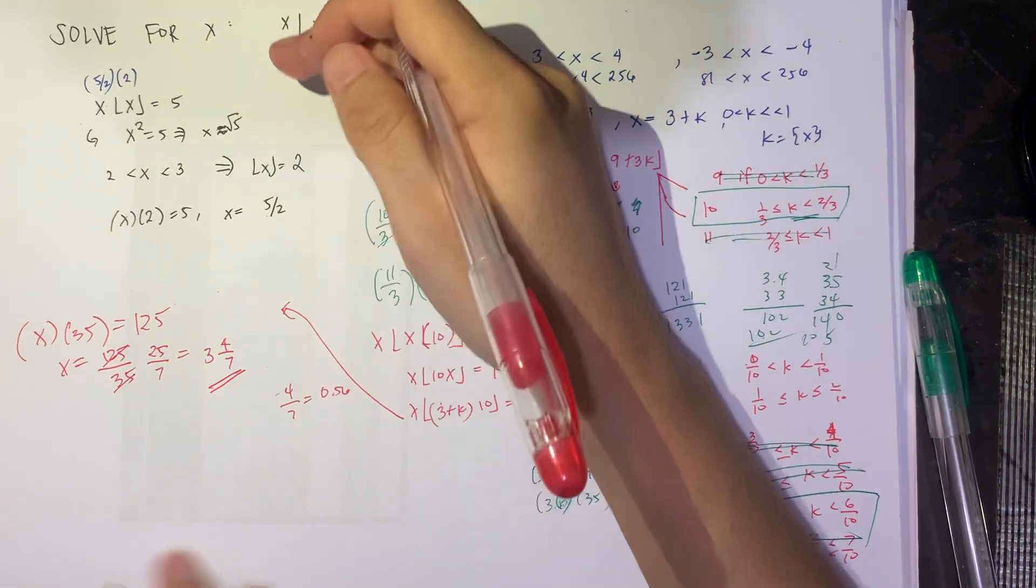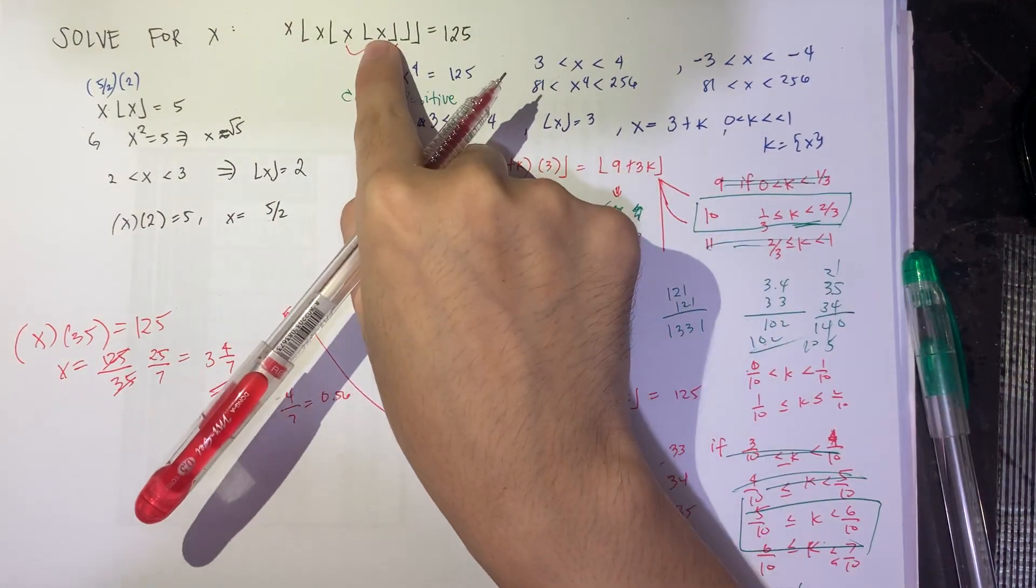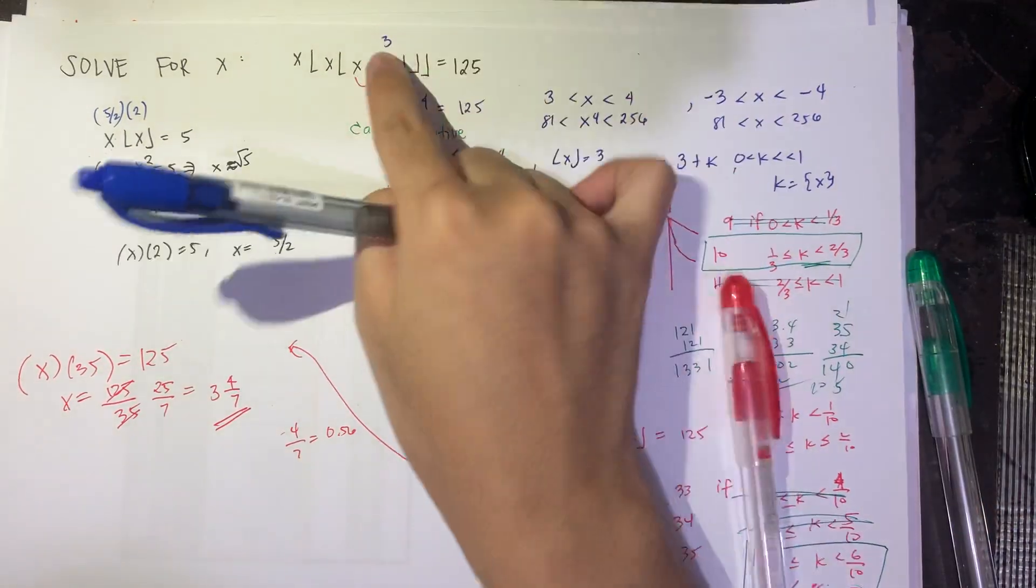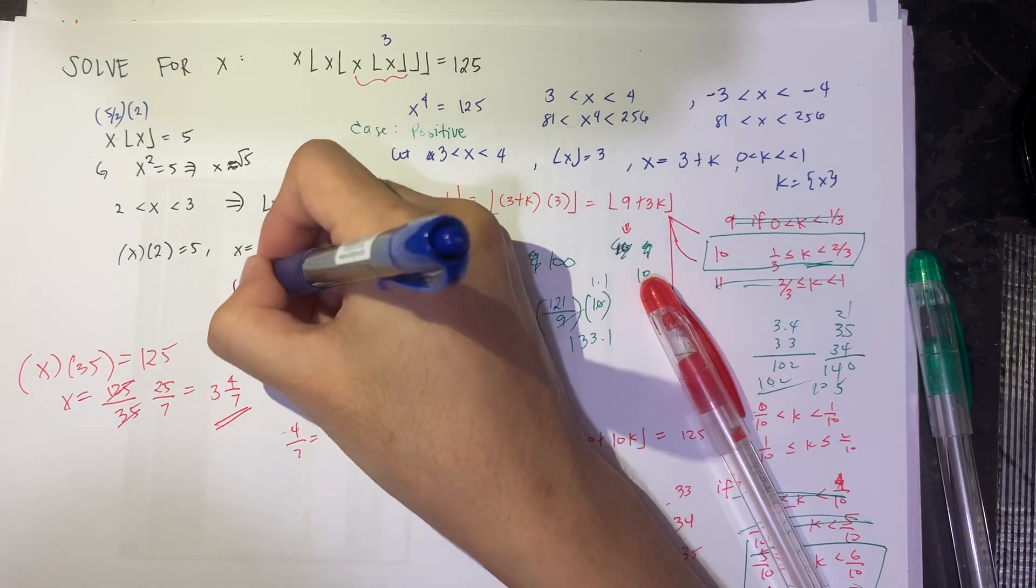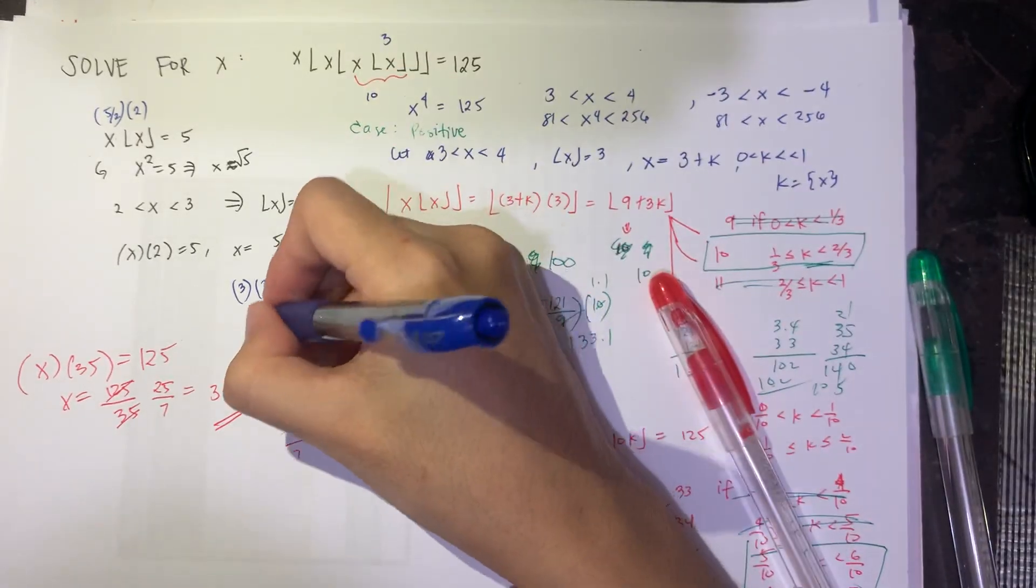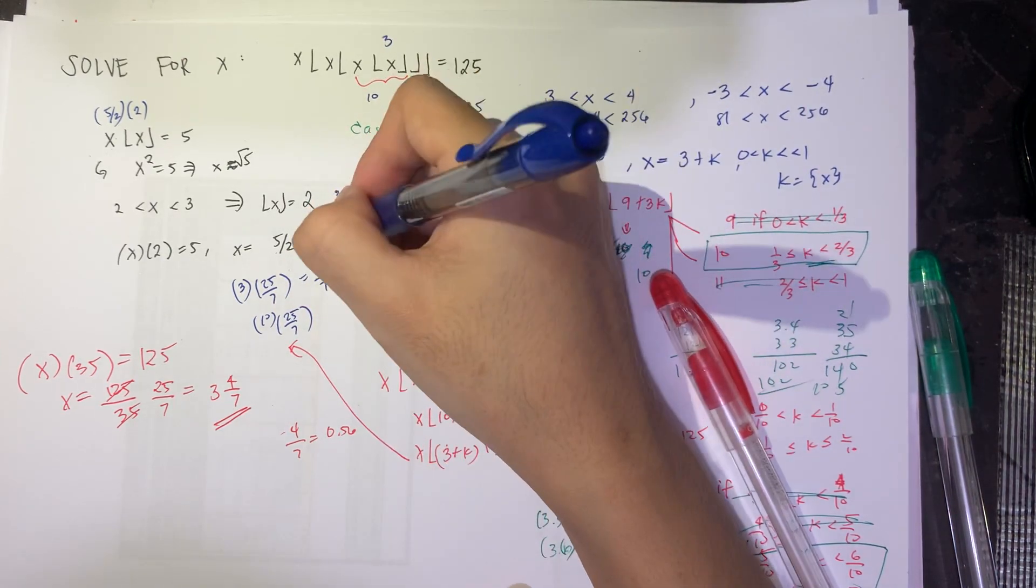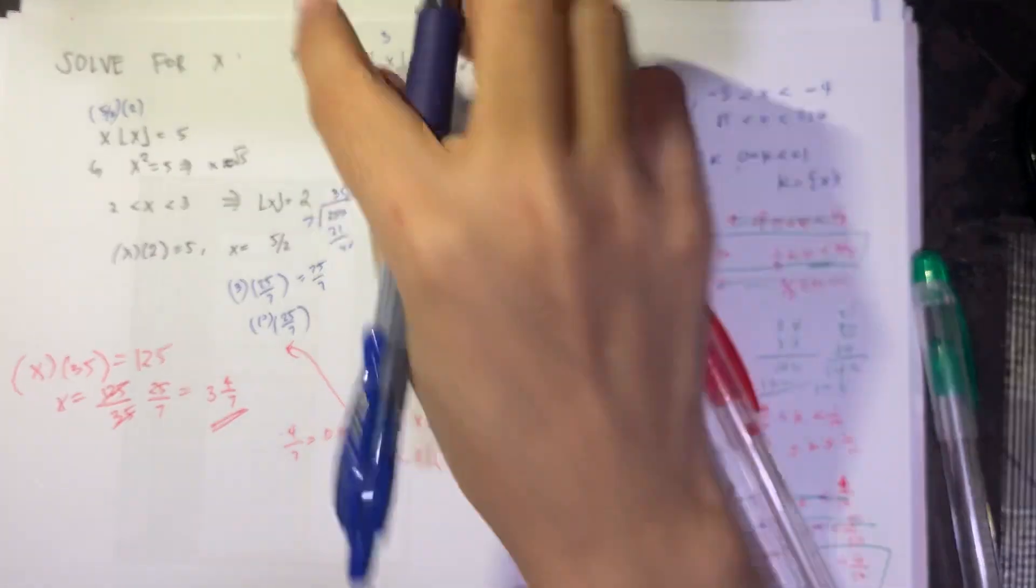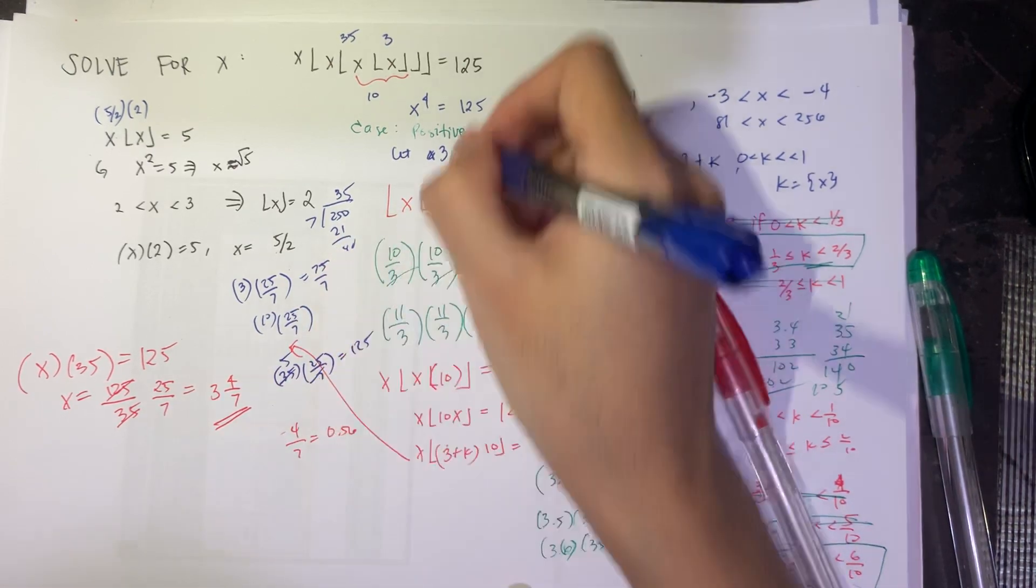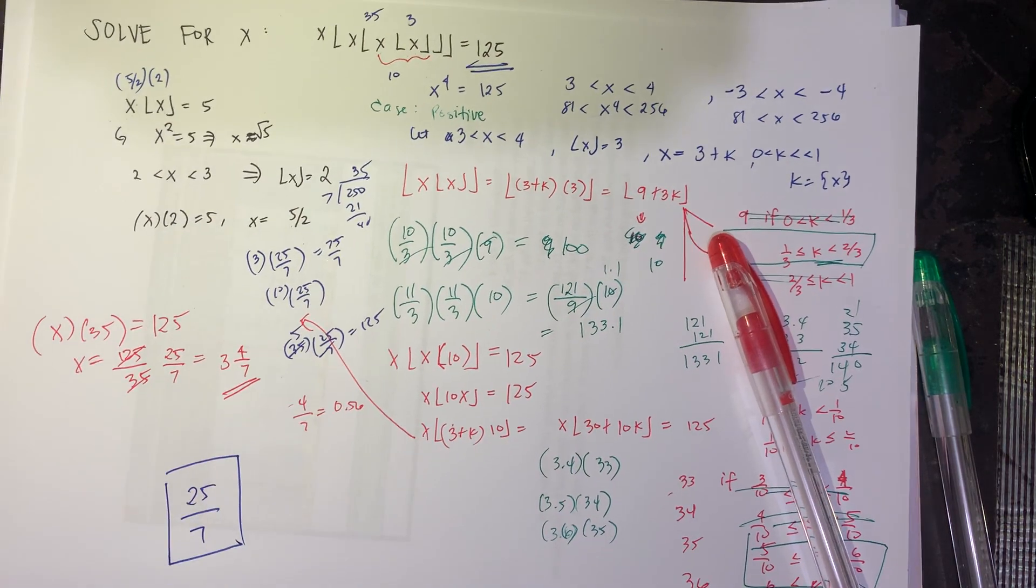So let's check for this equation. So this one is, let's start from the inside. Floor of 25 over 7, that's 3. So this is 3. 3 times 25 over 7 is 75 over 7. So that's roughly 10. And then 10 times 25 over 7, 250 over 7. So that's roughly around 35. So 35 times 25 over 7, that's 875 over 7, which is 125. So the correct answer is 25 over 7. Yes?